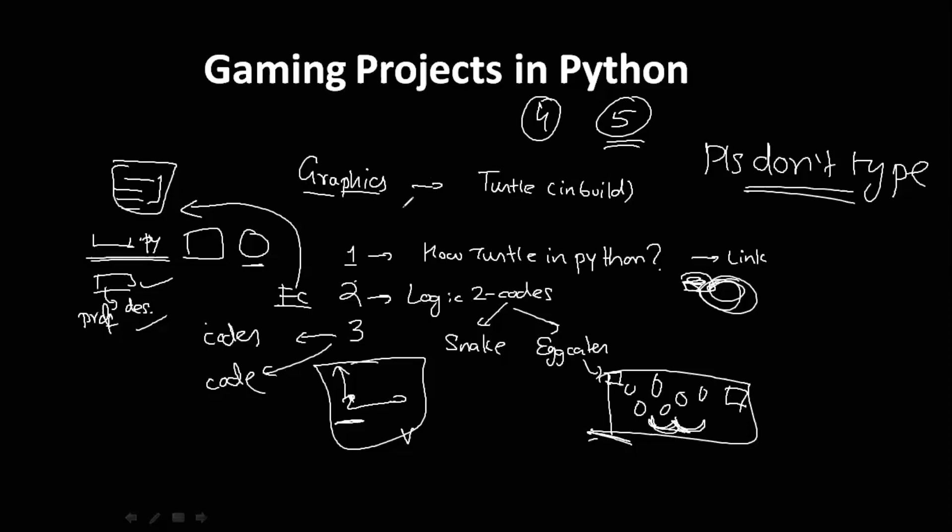So in this next video, you will understand how turtles work in Python, where you can look up for more functions. I think there are some 200 plus functions that are there. We'll just work with some 10, 15 in the next video to explain how this thing works. If we explain it for a rectangle, you can draw a triangle, circle, semicircle, all those things on your own. The documentations are very well defined for that. Other than that, we will show you how we made the logic for two projects and how do you derive from a logic.